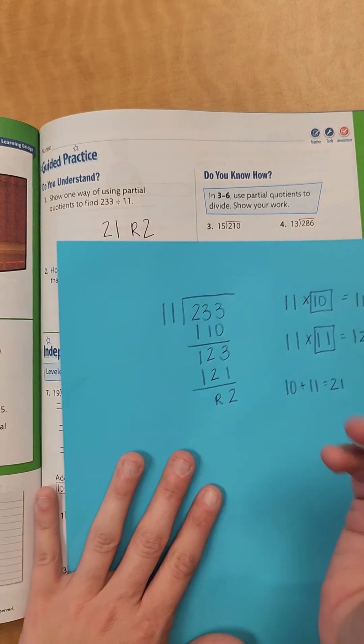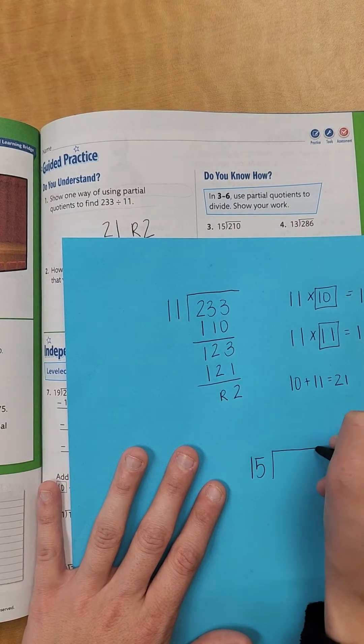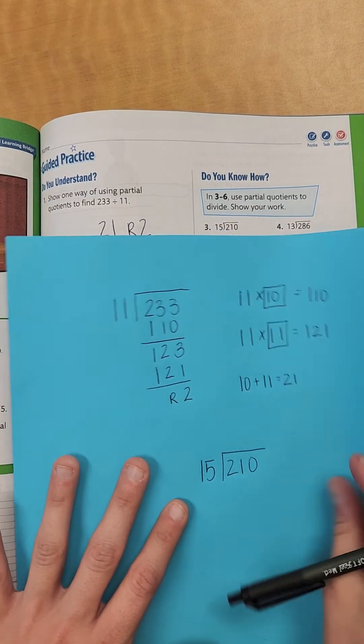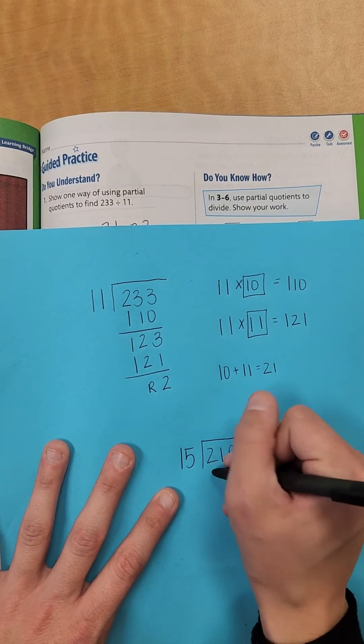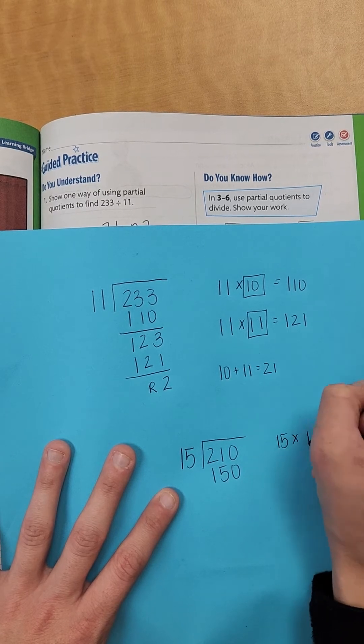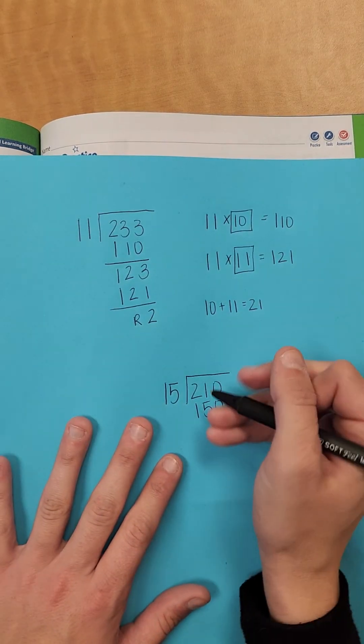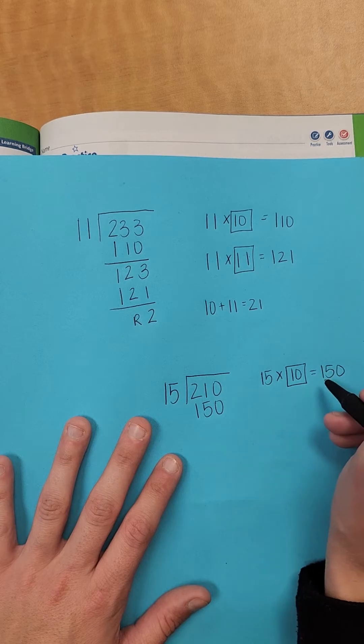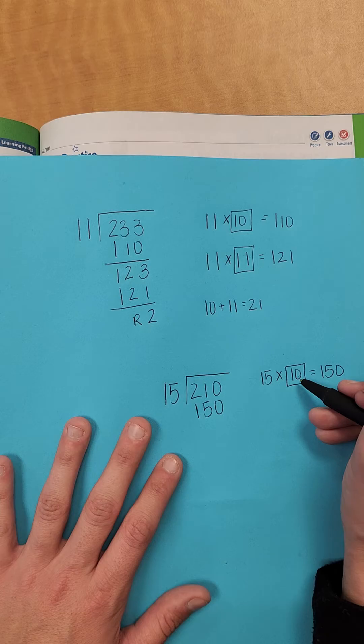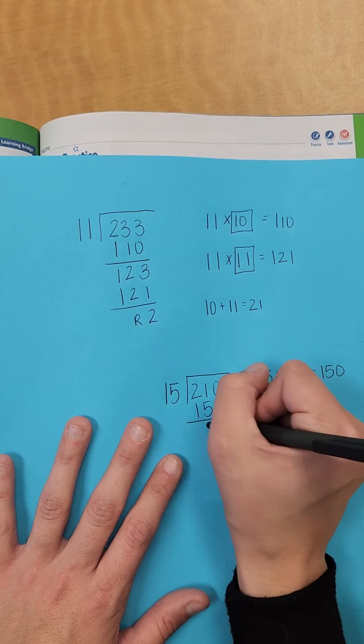Let's do this one right here, 15 into 210. Now I can multiply 15 times 10, which gives me 150. So I'll go ahead and do that, 15 times 10 equals 150. If you don't put all this on the side, that's fine, but you do have to put that 10, because that's what you're adding up at the end. So I'm going to subtract that. I'm left with 0, 15, 21 minus 15 equals 6.